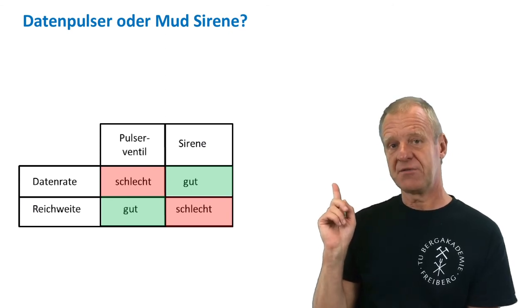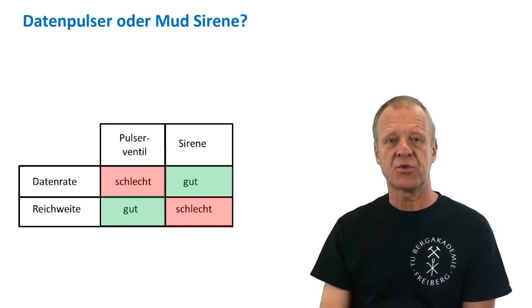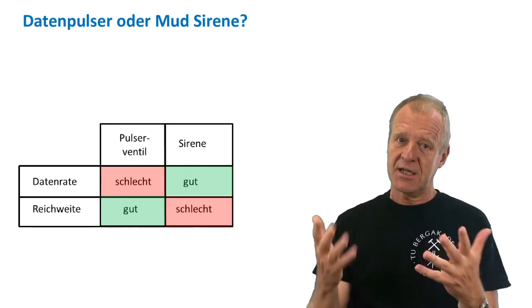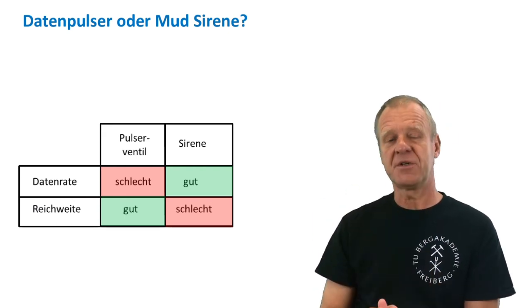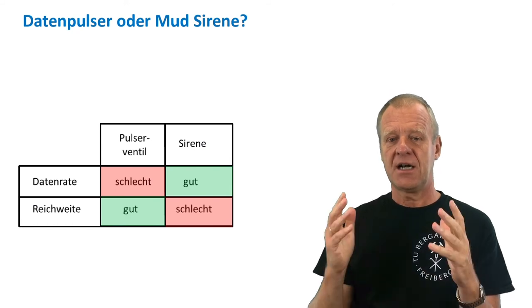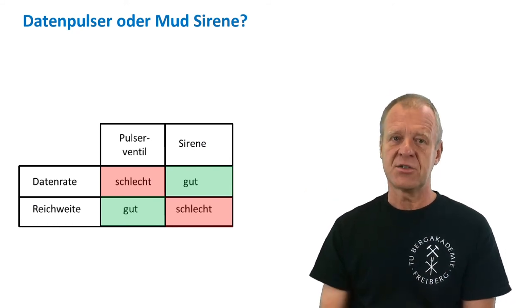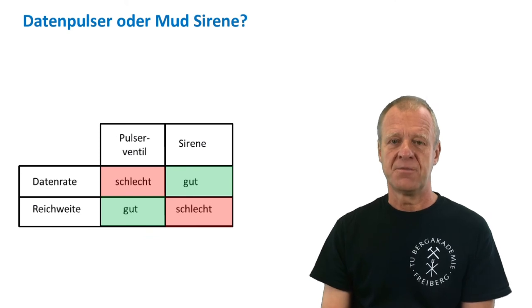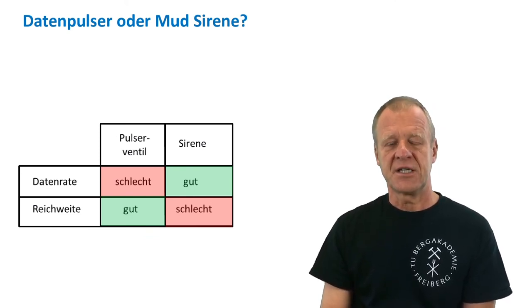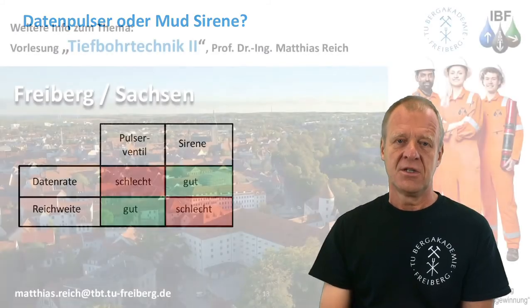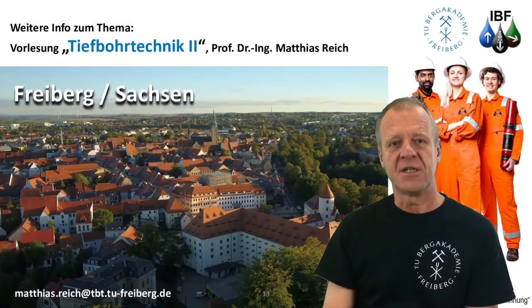At our institute here in Freiberg, we are working on improving the siren. We will keep the higher data rate of the siren, applying new mathematical algorithms to recognize the weak signal over longer distances than before. This will help to increase the reach of the mud siren so that it can be used in longer boreholes than before. How this is done we can explain in our lecture, Drilling Engineering 2, here in Freiberg.